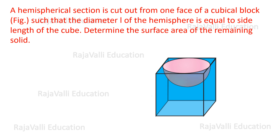The question is: a hemispherical section is cut out from one face of a cubical block such that the diameter L of the hemisphere is equal to the side length of the cube. Determine the surface area of the remaining solid.